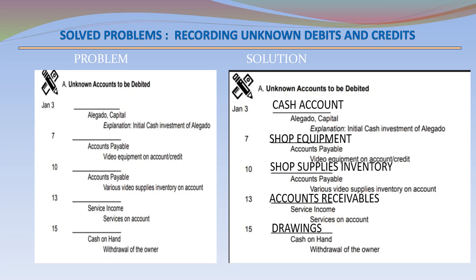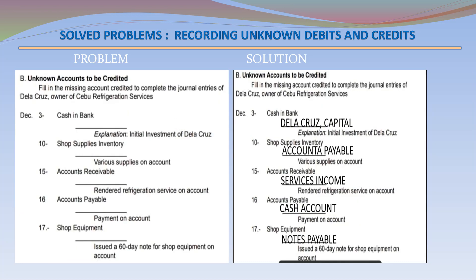January 15 – Drawings Account Debit, Cash on Hand Credit – Drawing of the owner. Solution B – December 3 – Cash in Bank Debit, De La Cruz Capital Credit – Initial investment of De La Cruz. December 10 – Shop Supplies Inventory Debit, Accounts Payable Credit – Various supplies on account.